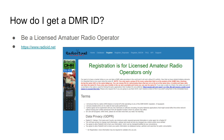How do you get a DMR ID? You need to be a licensed amateur radio operator. You type in your call sign and go over to radioid.net. That website explains what you need to do and how to apply for your DMR ID. Once you get your DMR ID back, you program it into your radio and you're off to the races. This is how it works in the United States — due to data privacy rules, you may register differently in parts of the European Union.